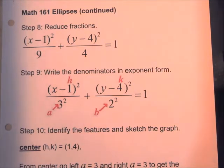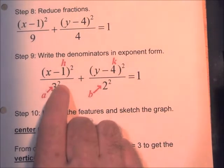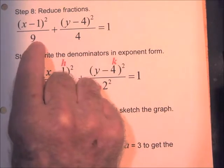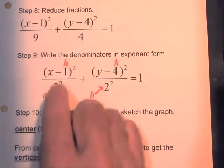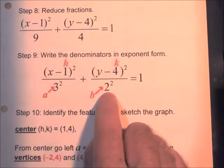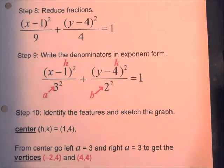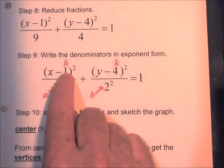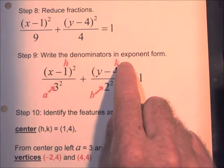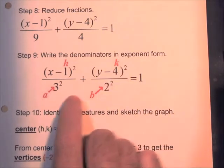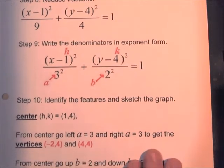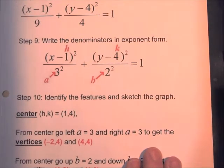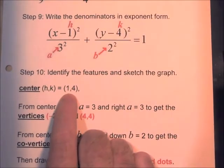You could stop there — it's close enough to identify the features. To exactly match the standard form, replace the denominators with squared values: 9 is 3 squared, and 4 is 2 squared. Now it exactly matches the form. We can identify: h equals 1 (the number inside the x parentheses), k equals 4 (the number inside the y parentheses), a equals 3 (the number under x), and b equals 2 (the number under y).